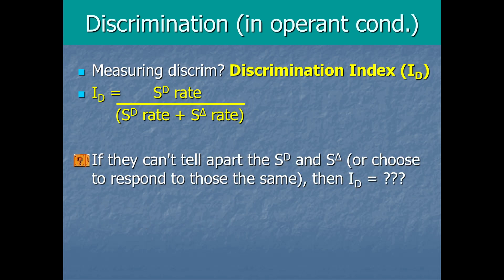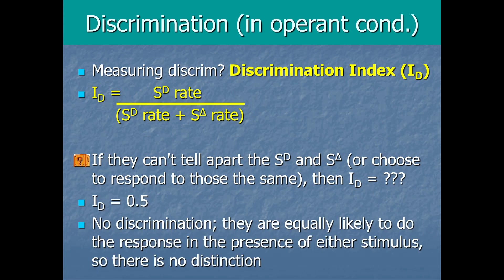How about if they can't tell apart the SD and the S delta at all? Or if they just don't care and they choose to respond the same? Like if they do just as much behavior to each of those two stimuli, the one we reinforce them for and the one we don't reinforce them for, what would the discrimination index be? Again, pause the video a moment and try to figure that out. If you're not sure, it may help to just plug in some numbers. Like if they did 100 behaviors to the SD and 100 behaviors to the S delta, right, if they're treating them the same, then plug that into the equation. You get 100 divided by 100 and 100. So 100 over 200 comes out to 0.5 is the discrimination index. But remember, this was if they literally don't treat the stimuli any differently. They behave the same to both of them as if they can't even tell them apart. So a discrimination index of 0.5 is no discrimination at all. They're equally likely to do the response in the presence of either stimulus. So there's no distinction there.